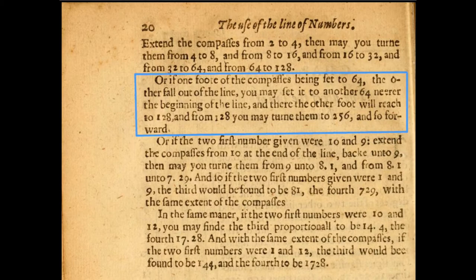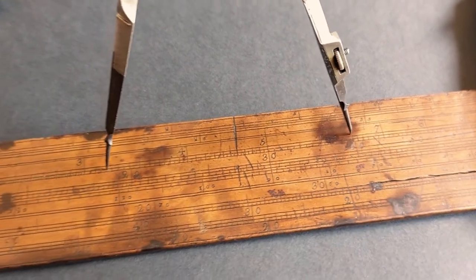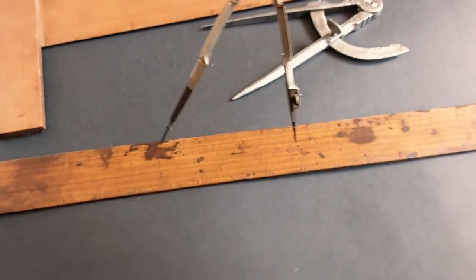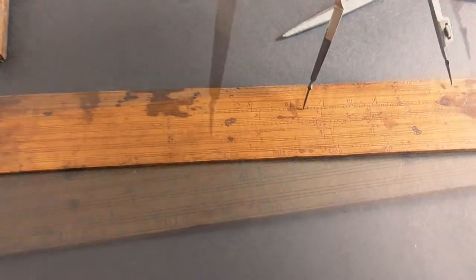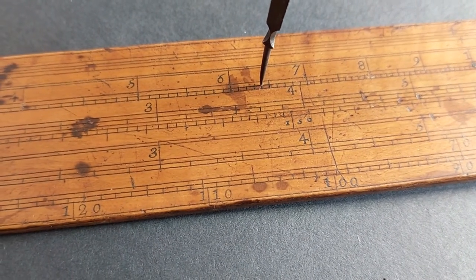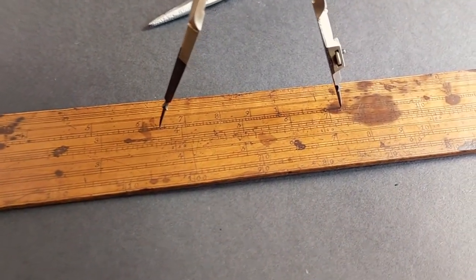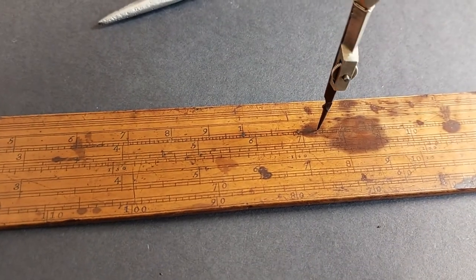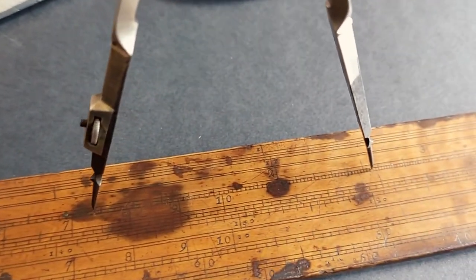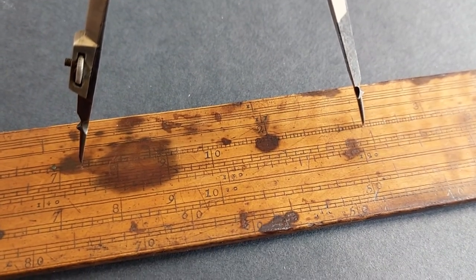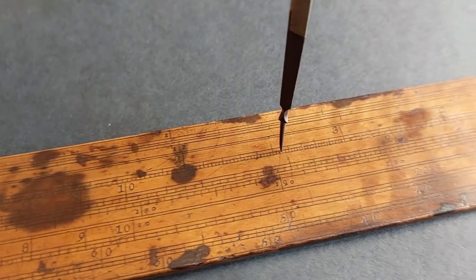The next instruction says: if one foot of the compass is set to 64 and falls off the line — in other words, you've reached the end — you may set it to another 64 nearer the beginning, and therefore the other foot will reach to 128. So we take it back to the first decade, pick out 64 at the beginning of the rule, and carry on to 128, then turn again to 256, and again to 512.